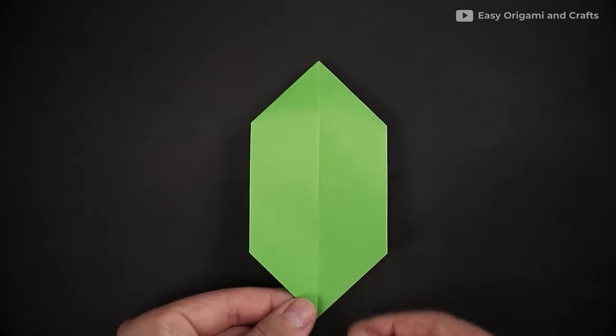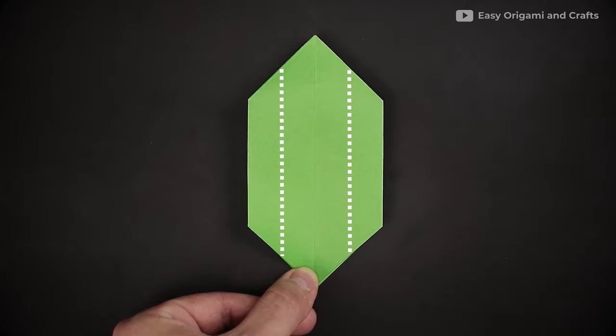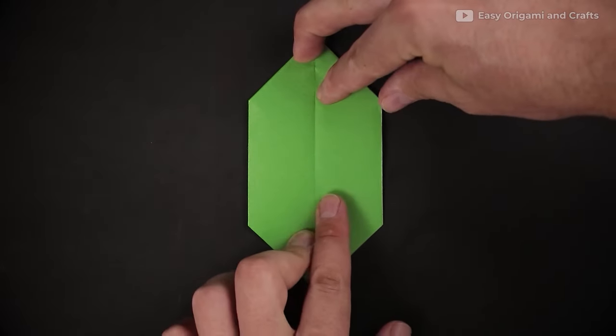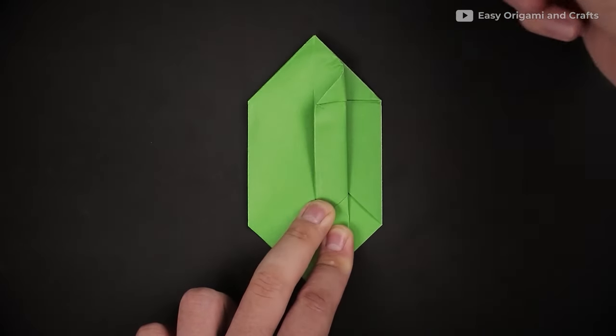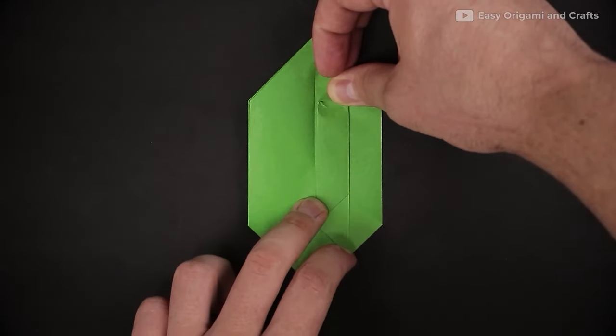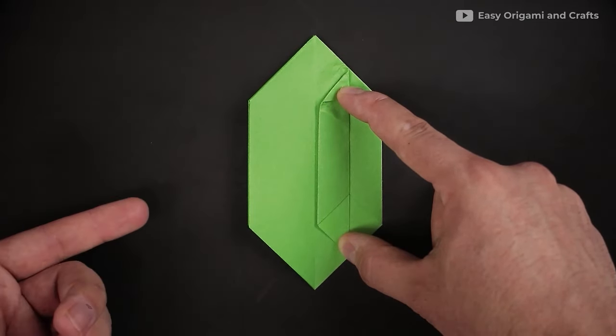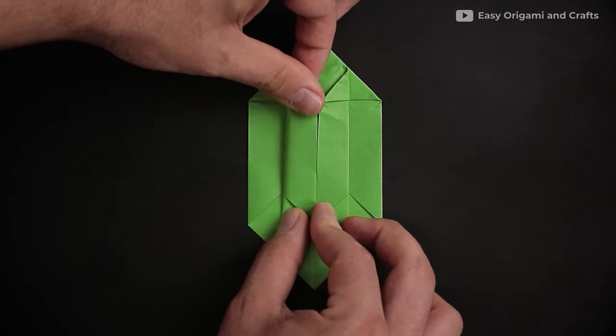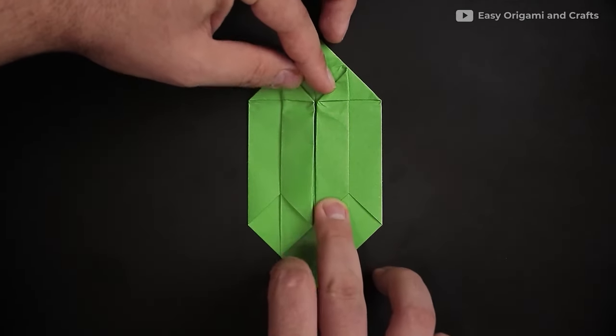Now, just like we did in the beginning, here in the front layer, let's fold the right and left side to the middle. First, the right. Like this. And then, the left, too.